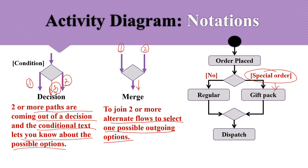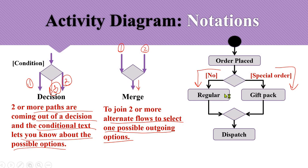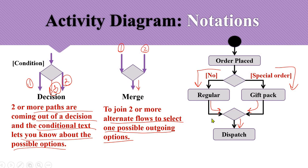Whether the order is regular or special, in both cases the next activity is dispatch. To represent this, we use the merge node to combine the alternate flows — either coming from the regular path or the gift-packing activity — into one outgoing flow leading to dispatch. Alternate flows are represented with the merge node.